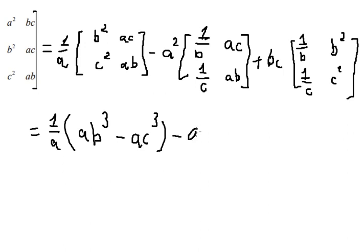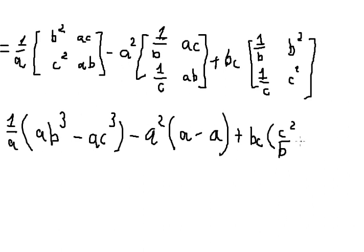Minus A squared multiply with A, and we need to minus this one and you got about negative A. BC, and we have C squared over B minus B squared over C.